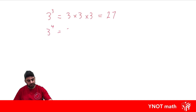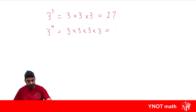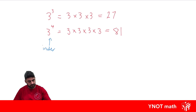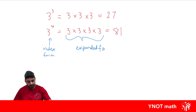Three to the power of four — we're taking that base number and multiplying it by itself however many times the power is. So this one is three times three times three times three. Three times three times three is 27, and 27 times three is 81. We can call this being in index form because it has an index, and over here we have expanded form, and we can even mix them.